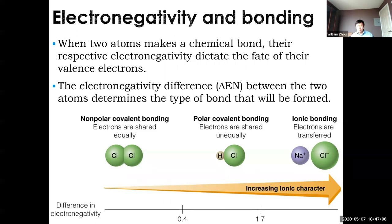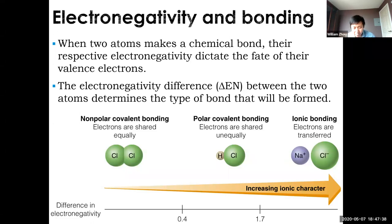It's not a black-and-white thing — you don't flip a switch from covalent to ionic. There are things in the middle with both ionic and covalent character. The magic number is 1.7: if the electronegativity difference between two elements exceeds 1.7, the bond is considered ionic; if it's less than 1.7, it's considered covalent.